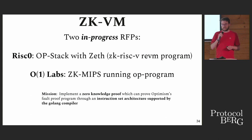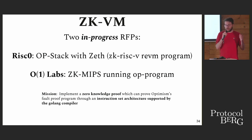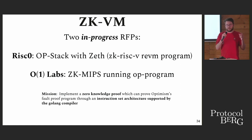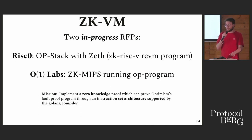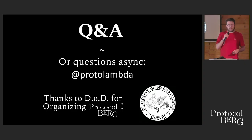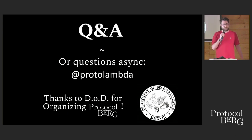Last but not least, we have the ZK VM idea. We do not always have to make optimistic proofs — we still believe in ZK approaches, and we have different efforts we support with the Optimism Collective. Risc Zero has ZEV: a REVM-based RISC-V ZK prover with modifications to support the OP stack. You can have a similar idea of a program, and then with the Risc Zero proofing stack and virtual machine, you get the same kind of composition. We also have a MIPS version. That wraps up the optimistic proofing and ZK proofing — I hope you learned something.